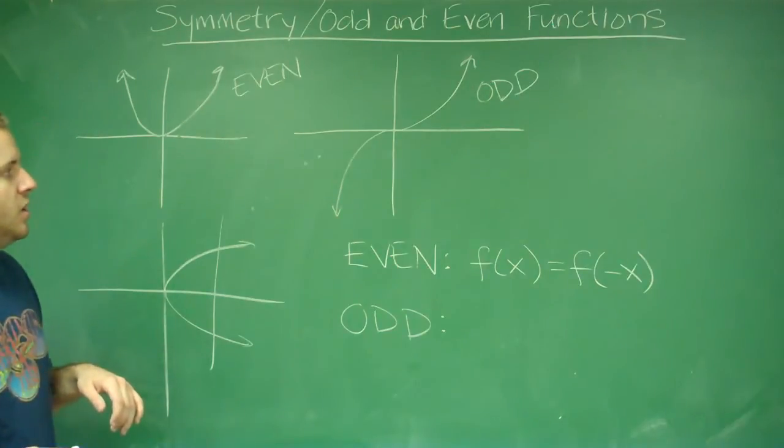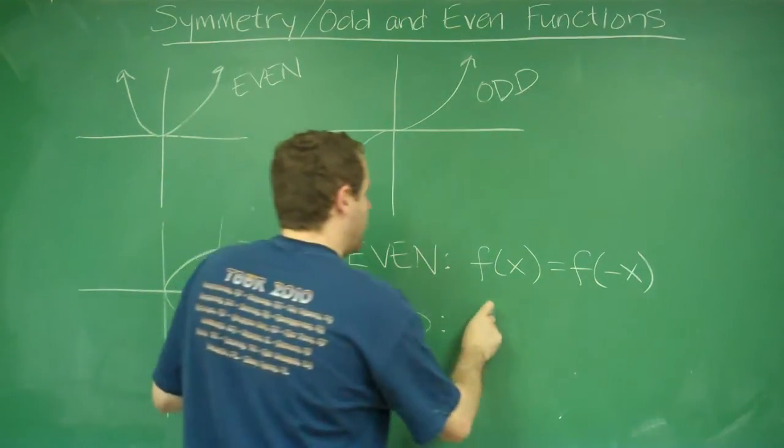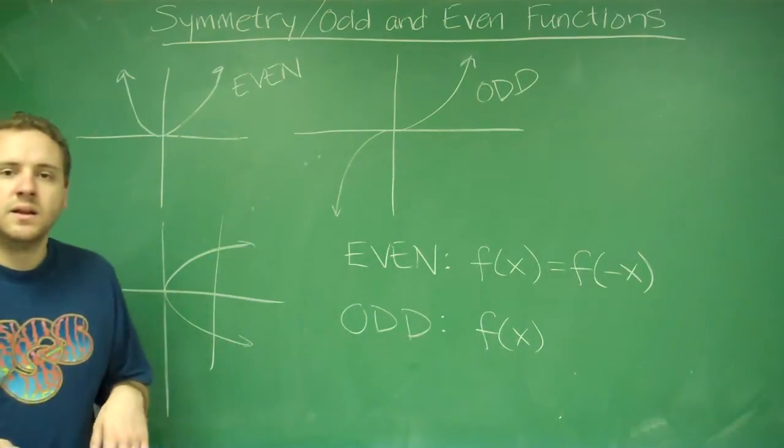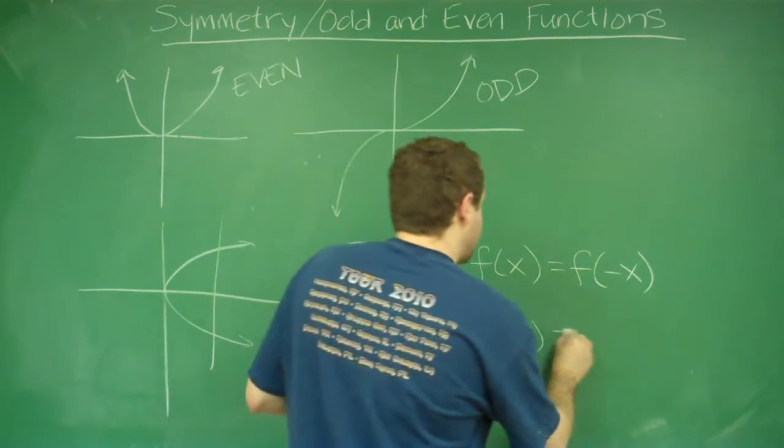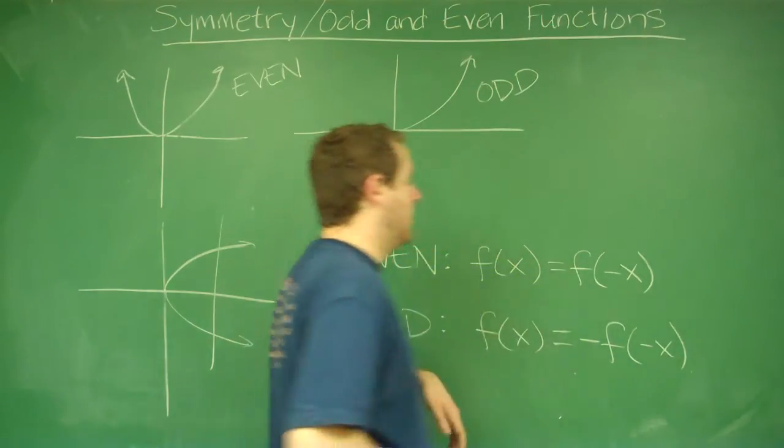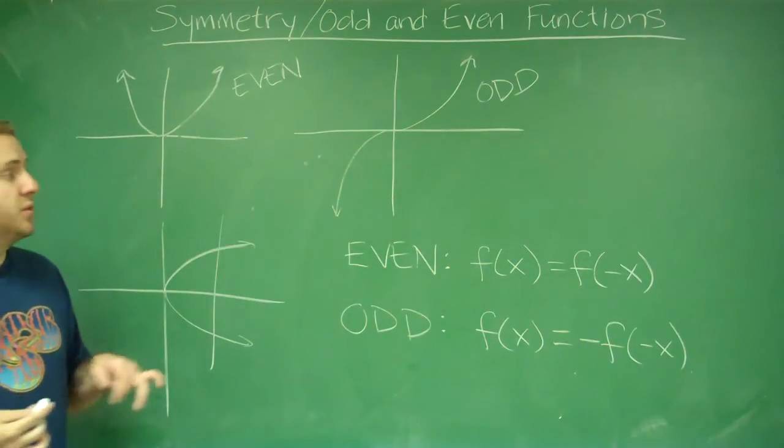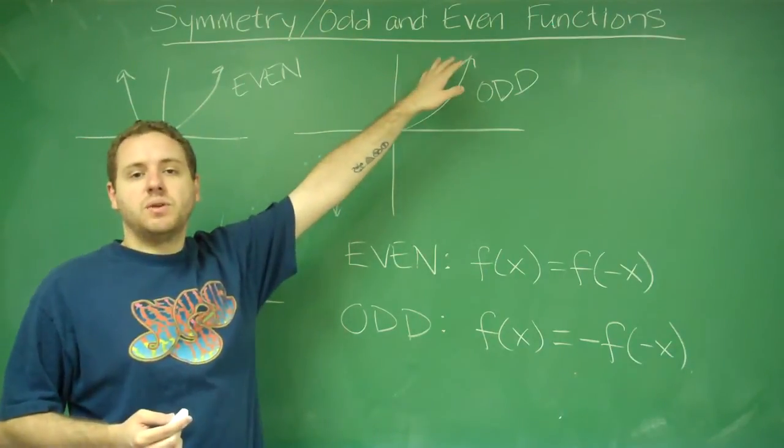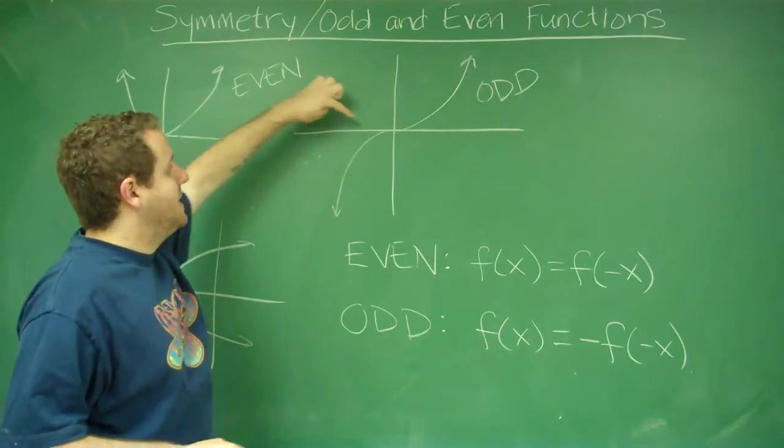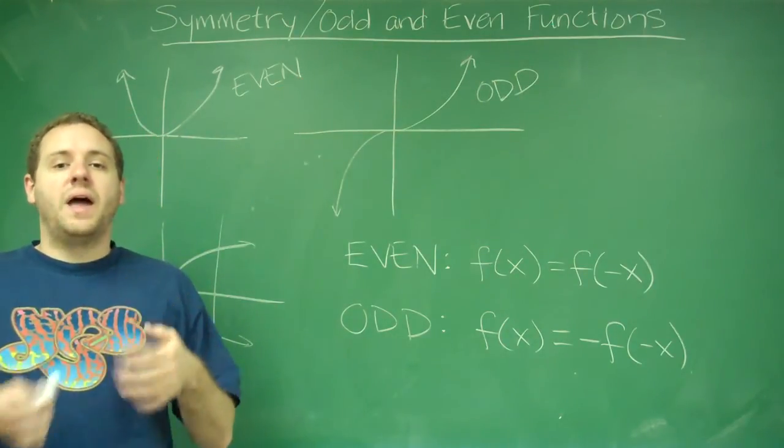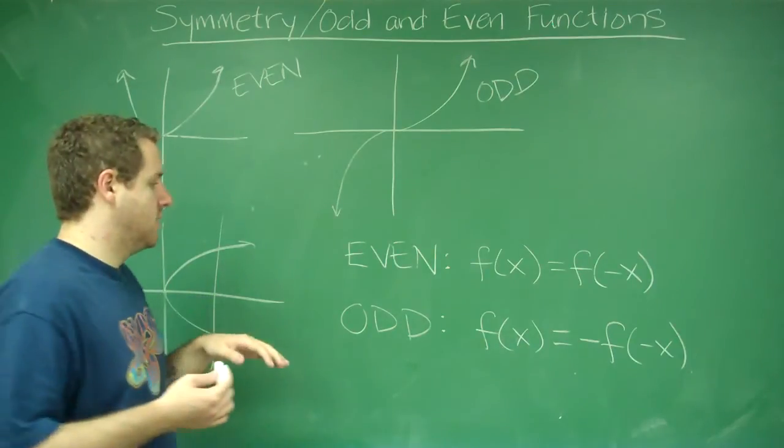For an odd function, what this means is if you have f of x, the y at any given x, that is the exact same as the opposite of that y at the opposite x. So for example, on this odd function, if you plug in x equals 3, let's say we got 3 for the y. That means if you plug in negative 3 for the x, you have to get negative 3 for the y. The x's are opposite and the y's are opposite.